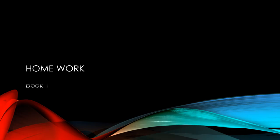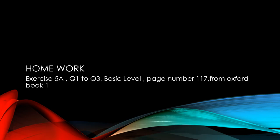Now, homework is exercise 5a, question number 1, 2, question number 3, all the parts. This is the basic level. Page number 117 from the Oxford book 1. Do in your algebra copy with rough column.